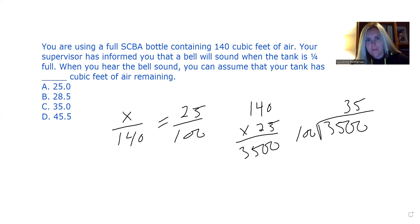I cross multiply and divide in this format. So I first multiplied 140 by 25, and that gave me 3500. From there, I divided the answer by the remaining number, which is 100. So 3500 divided by 100 gives me 35. That is in fact the answer - C, 35 cubic feet of air remaining.